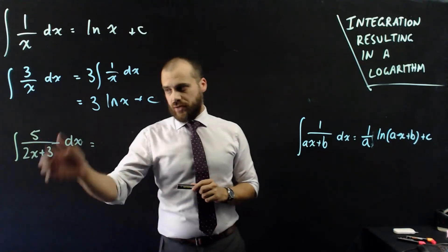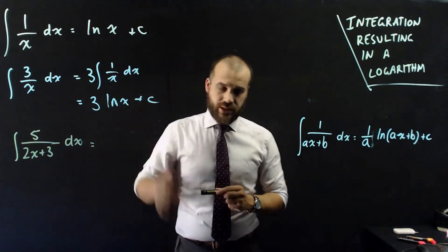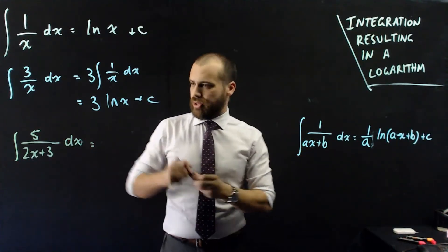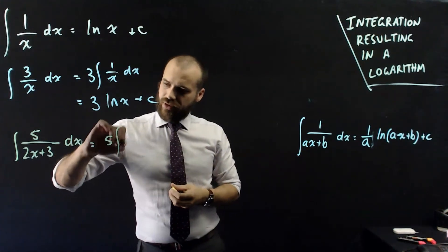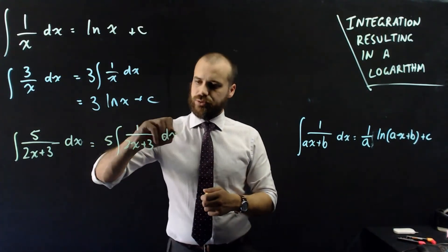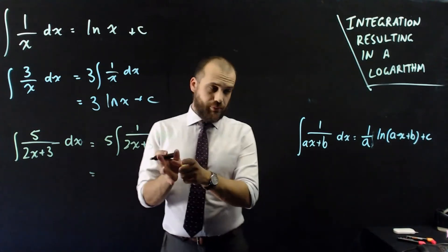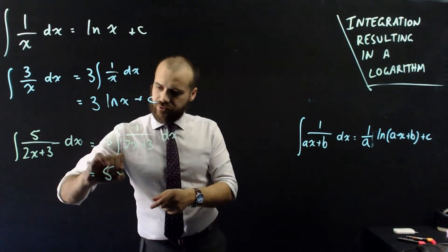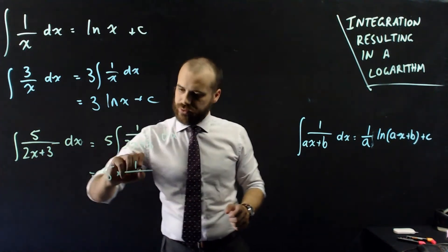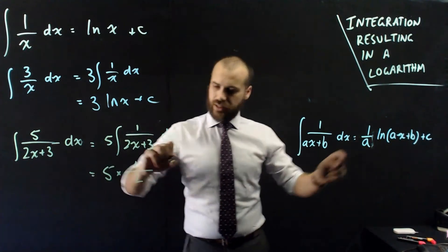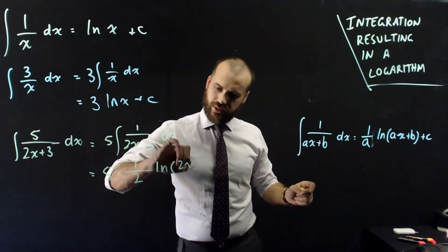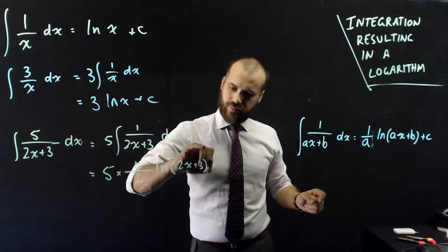Here we have the integral of 5 on 2x plus 3 with respect to x. It doesn't really follow our rule exactly because there's a 5 on the top, not a 1, but I can fix that by bringing the 5 out the front. So, now we can apply our rule. It's going to be 5 times 1 over a, 1 over a, which is 2, ln, ax plus b, 2x plus 3, plus c.